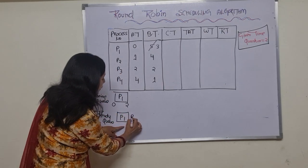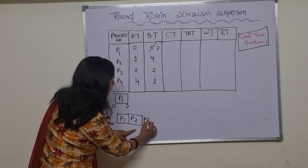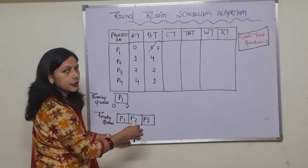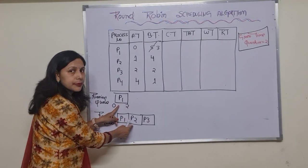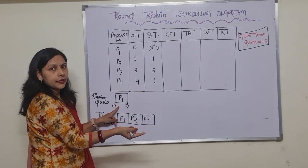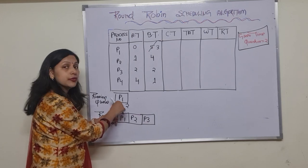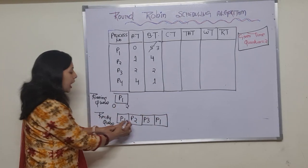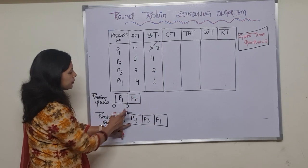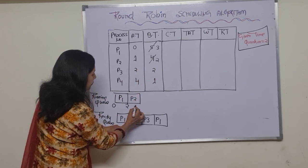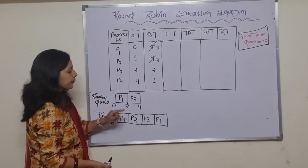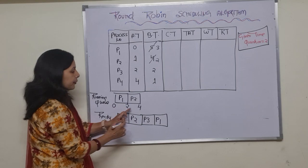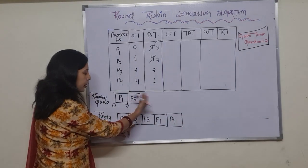After P1's slice, P2 and P3 have arrived. The CPU is now allotted to P2 - P1 is preempted and goes back into the ready queue. P2's burst time is 4, so it runs for 2 quantum of time, with remaining time of 2. Between time 2 to 4, process P4 has arrived, so we add P4 to the ready queue after P1.